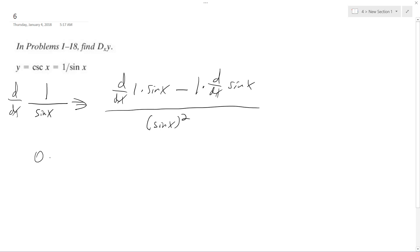So what we get is 0 times sine of x minus 1 times the derivative of the sine is cosine x over sine squared x. So simplifying this...